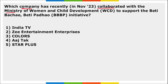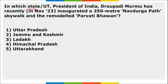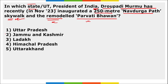Colors channel collaborated with the Ministry of Women and Child Development to support an initiative. In which state or UT did President Droupadi Murmu inaugurate a 250-meter Navdurga Path skywalk and remodeled Parvati Bhavan? It is in Jammu and Kashmir, built at a cost of 15.69 crore rupees. This skywalk receives almost 10,000 to 15,000 pilgrims every day.